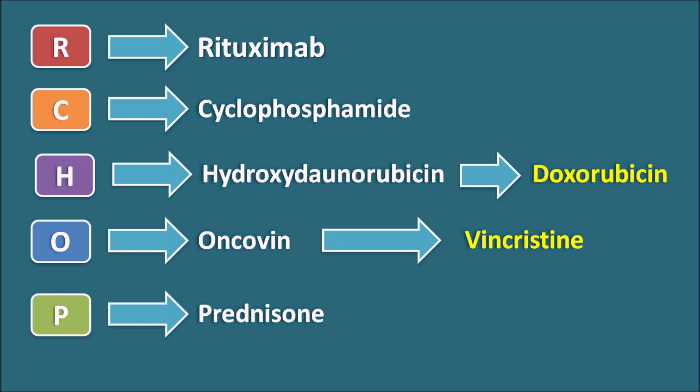All these drugs are commonly used in the treatment of lymphocytic leukemia. O indicates oncovin, which is vincristine, and H indicates doxorubicin. These should be remembered because they start with different letters than their drug names.